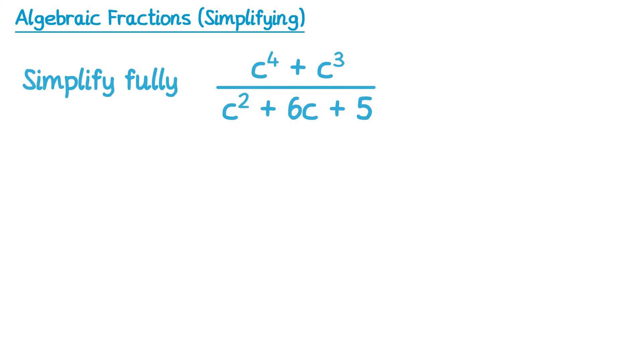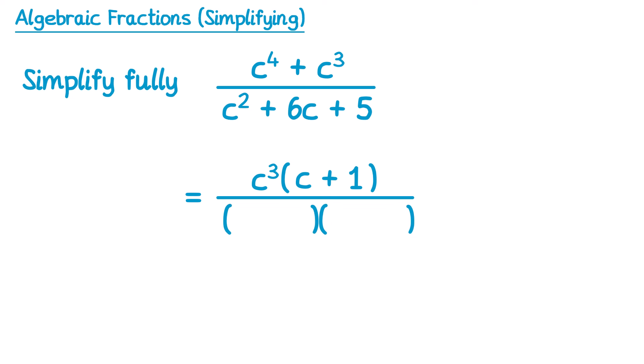Now let's try another one. On the top here we've got a single bracket factorisation — we can factorise out c to the power 3. To get from c to the power 3 to c to the power 4 we need one more c, and then we just need c to the power 3 again so we can multiply this by 1. On the bottom though we have a quadratic expression, this can be factorised into two brackets. We look for the numbers that multiply to make 5 but add to make 6, and that's 5 and 1. So this is c plus 5 and c plus 1. You can now see we have common factors on the top and bottom of c plus 1, so we can cancel those, and we're just left with c to the power 3 over c plus 5.